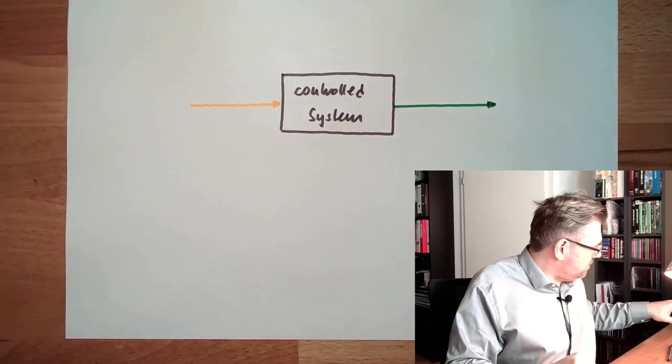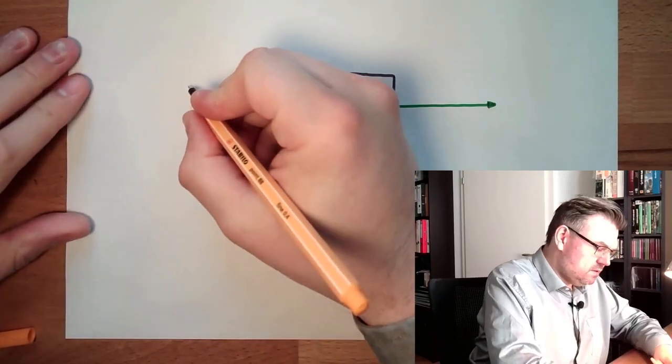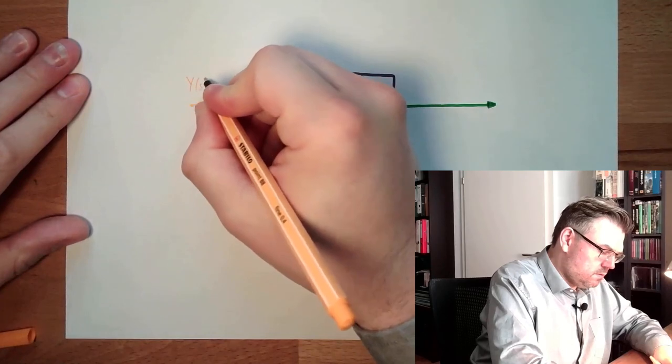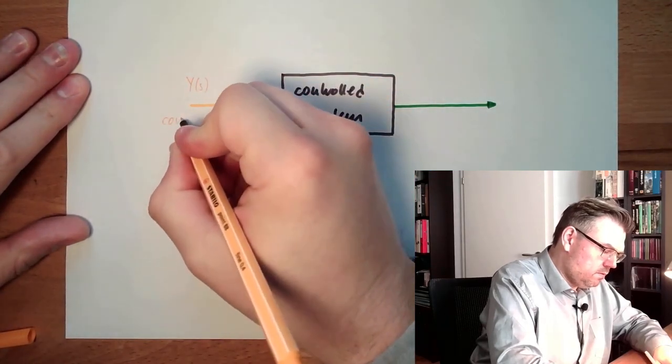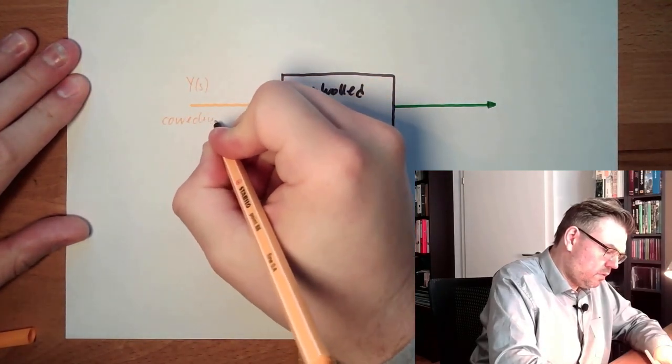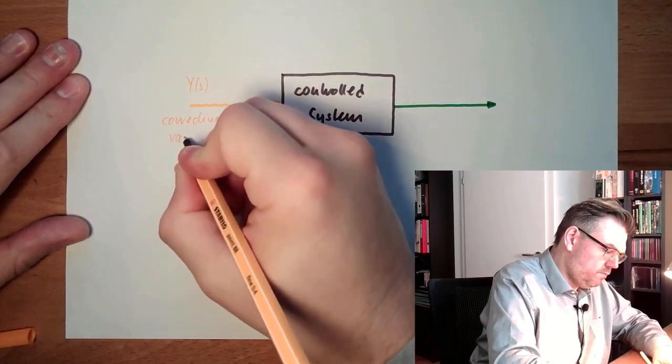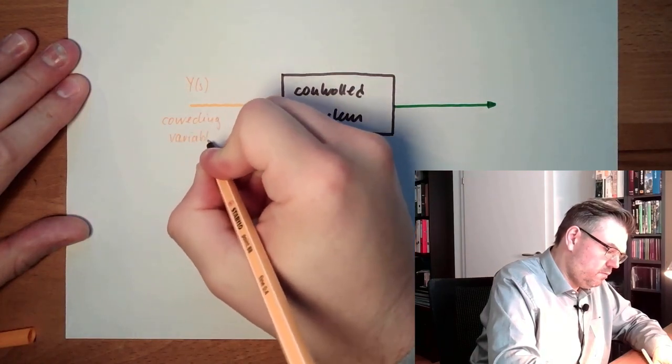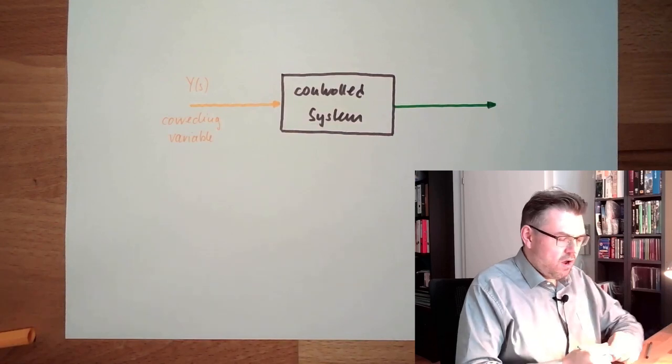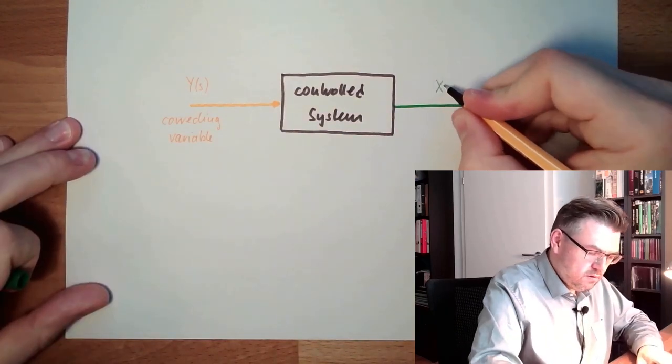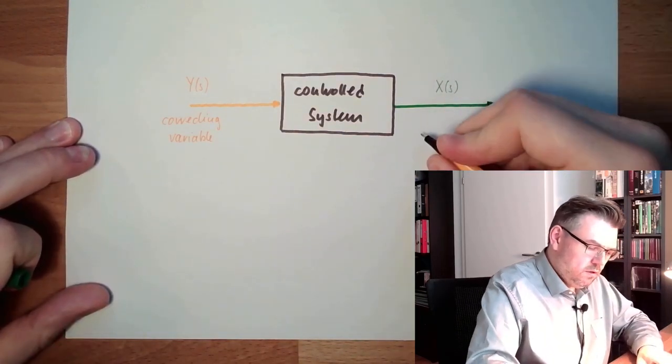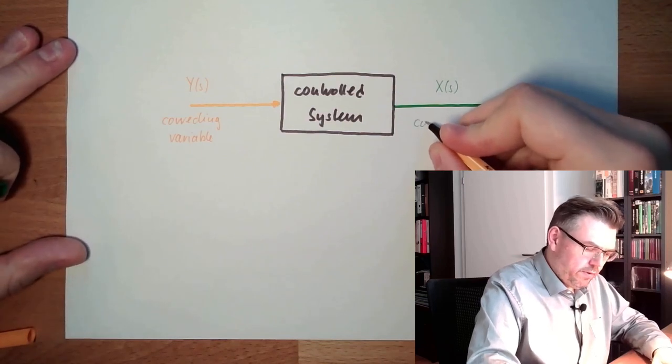So here we have this y from s, correcting variable. And here we do have our x from s. This is our controlled variable.